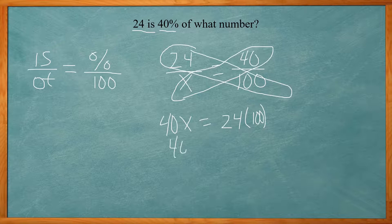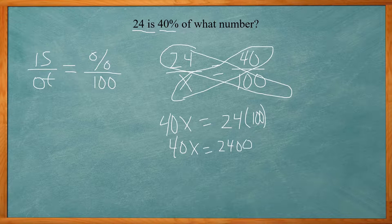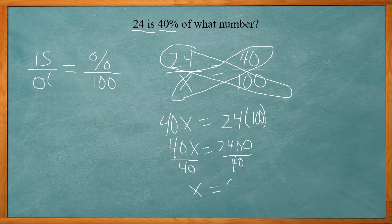40X equals 2,400. And then you get the X by itself and divide by what's in front of it. So 40. So X will equal 60.